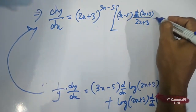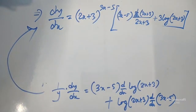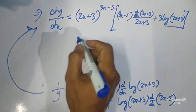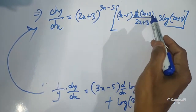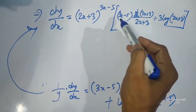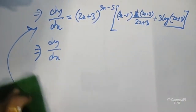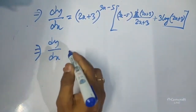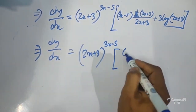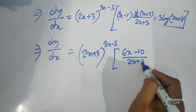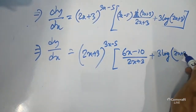So the final answer: dy/dx equals (2x plus 3) to the power (3x minus 5) into [(6x minus 10)/(2x plus 3) plus 3·log(2x plus 3)]. This is the answer.